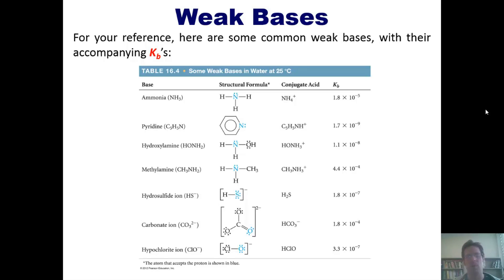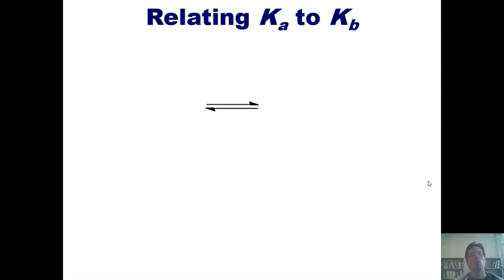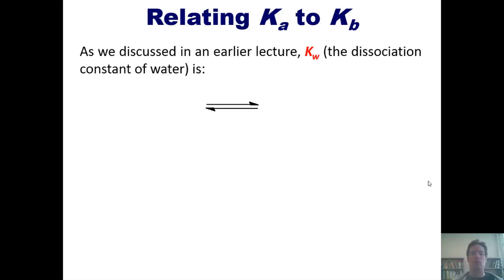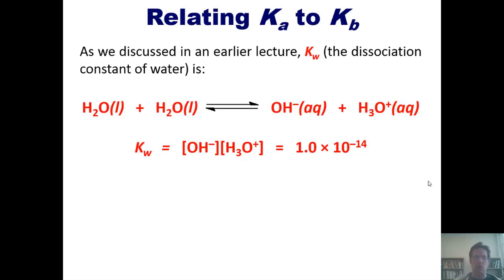So how do Ka and KB interrelate? As we discussed in an earlier lecture, KW, the dissociation constant of water, happens to be equal to the concentration of hydroxide multiplied by the concentration of hydronium and numerically equals 1 times 10 to the negative 14th at 25 degrees C. Interestingly, Ka times KB always equals KW. That's an important equation you should remember.